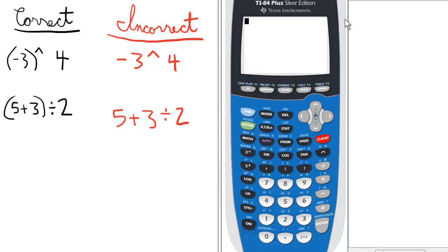The importance of using parentheses probably cannot be overstated. So, using it correctly, let's raise negative 3 to the 4th power, so we enclose the negative 3 in parentheses.